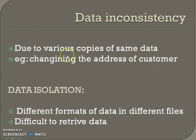Data inconsistency means various copies of the same data may no longer agree. For example, a changed customer address may be reflected in the personal information file, but not in the saving account record file. In DBMS, the related data resides in the same storage location, which minimizes data inconsistency.